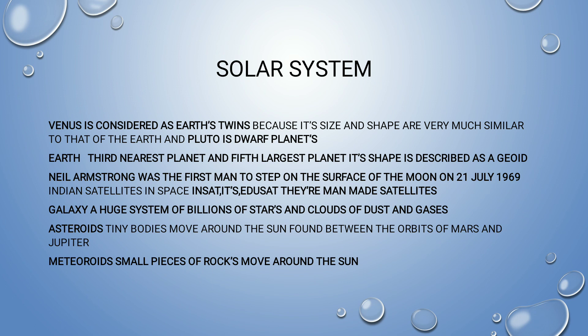Asteroids are tiny bodies that move around the Sun, found between the orbits of Mars and Jupiter. This is very important — asteroids are present between Mars and Jupiter, and this is frequently asked in various exams. Meteoroids are small pieces of rocks that move around the Sun.